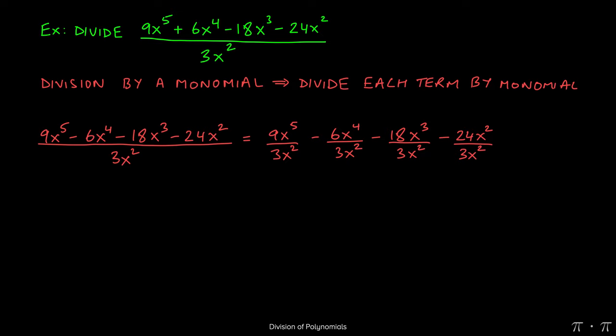We do this because the denominator is a monomial and we can split up the fraction into four simpler fractions that we can simplify individually.